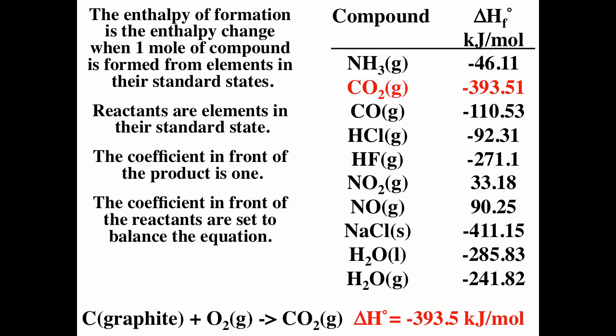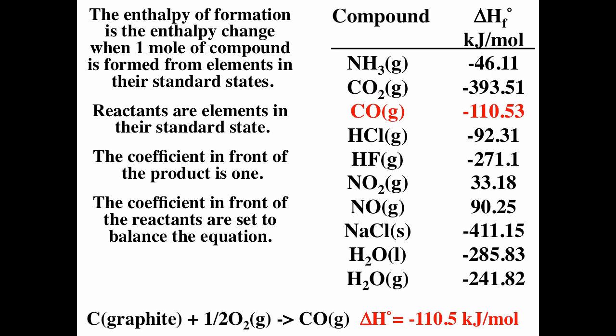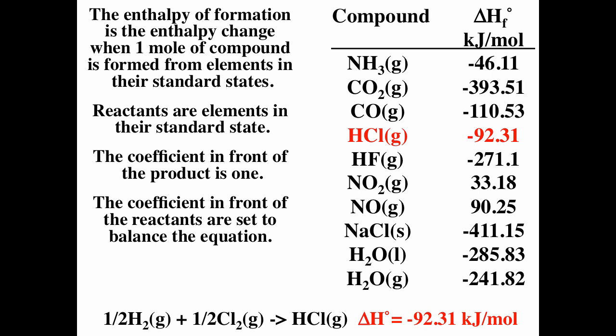For CO2, the elements in standard state are carbon graphite plus O2. For carbon monoxide, it's carbon graphite plus one-half O2 forming CO. All these formation reactions go from elements in their standard state to one mole of the compound of interest, and all the enthalpy values are measured quantities.